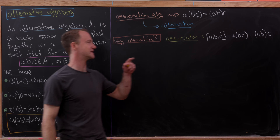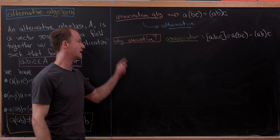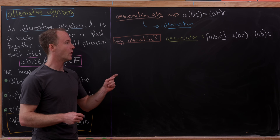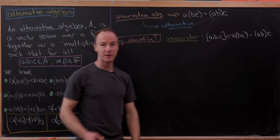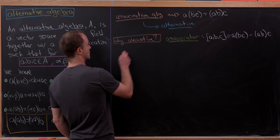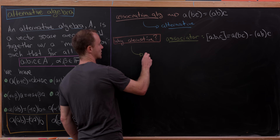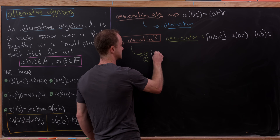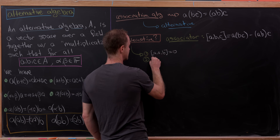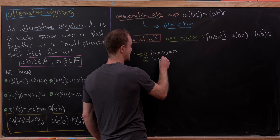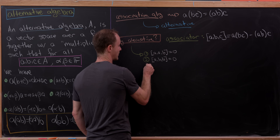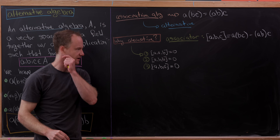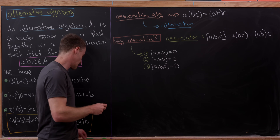What we'll show is that the associator is a so-called alternating multilinear form if we have an alternative algebra. What we mean by an alternating multilinear form is that if any entry is repeated, we get zero. That breaks down into three cases: AAB must equal zero, ABB equals zero, and ABA also equals zero — the three possibilities of having one entry repeated.